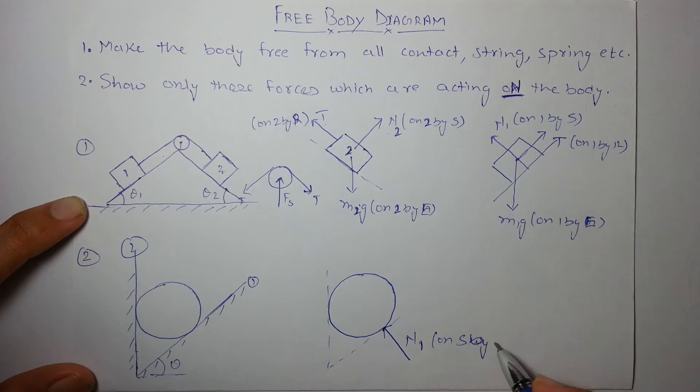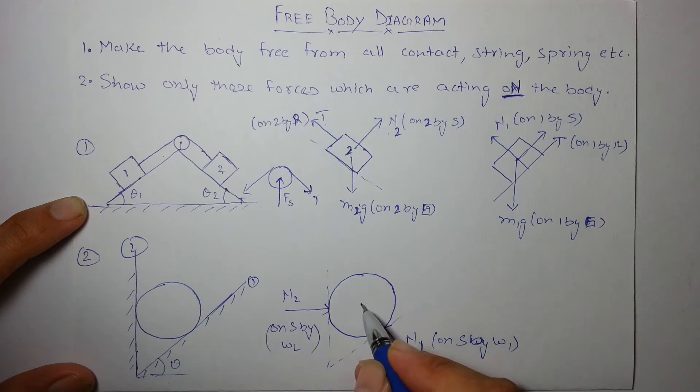N1 is the normal reaction on sphere by wall one, and this is the normal reaction on sphere by wall two, and this is weight again mg on sphere by earth. These are the three forces acting on sphere, this is the free body diagram of sphere.